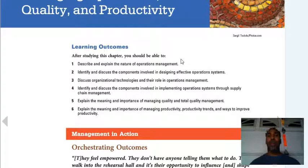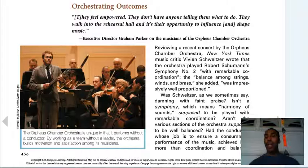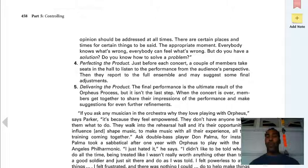Our learning outcomes are to describe and explain the nature of operations management, identify and discuss the components involved in designing effective operations systems, discuss organizational technologies and their role in operations management, identify and discuss the components involved in implementing operations systems through supply chain management, explain the meaning and importance of managing quality and total quality management, and explain the meaning and importance of managing productivity, productivity trends, and ways to improve productivity.